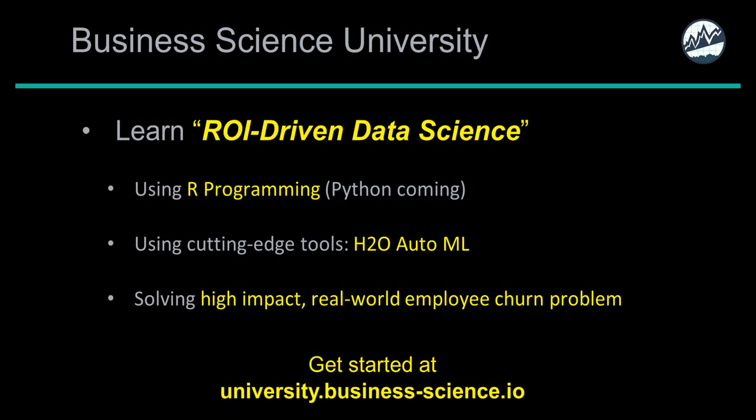If you're interested in learning ROI-driven data science, I recommend taking the next step with our new online course, Data Science for Business DS4B 201. We'll teach you the entire process using the R programming language and cutting-edge tools like H2O Automated Machine Learning while solving a high-impact real-world employee churn problem. Get started at university.business-science.io.